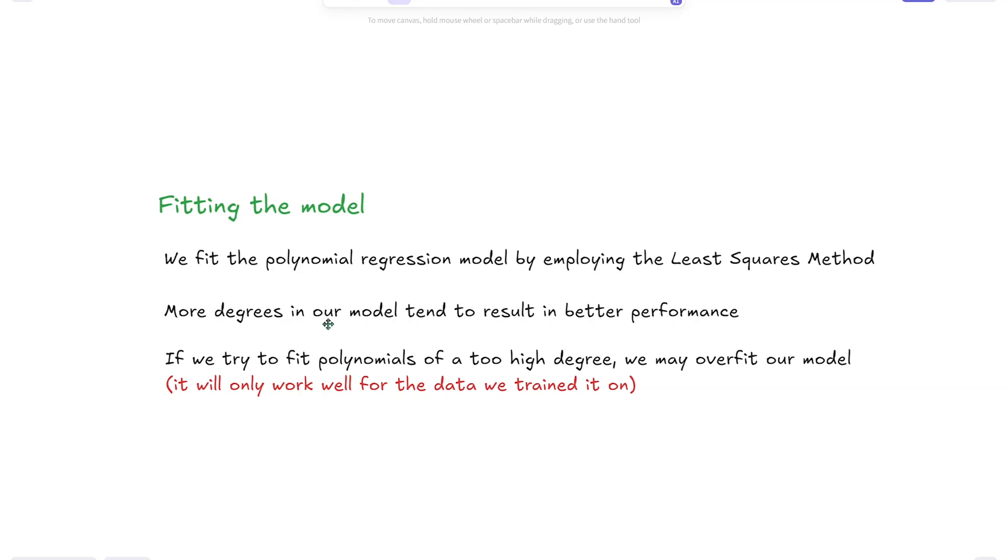More degrees in a polynomial regression model usually tend to result in better performance. But we must be careful because if we add too many orders, we may end up overfitting our model, meaning that it would work perfectly for the training data, the one we trained it on, but it actually wouldn't work well for predicting additional values.